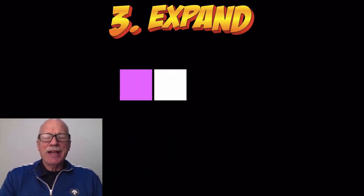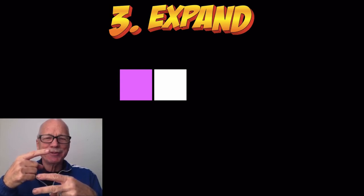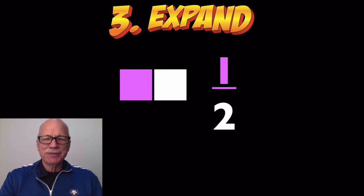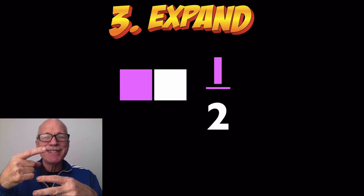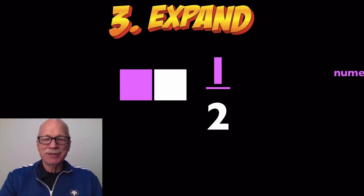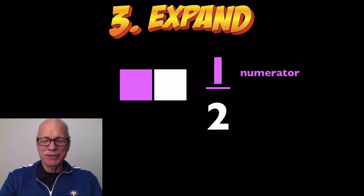Look at that. There's two squares, one of them is purple. One of the two squares is purple. One, numerator, some of the parts in a whole. Numerator, one. You know what the other number is, denominator.